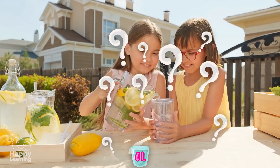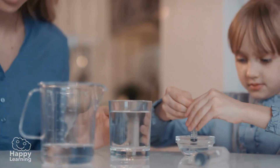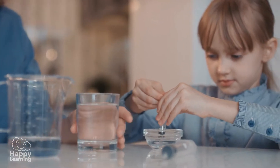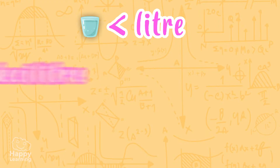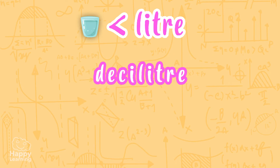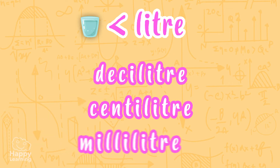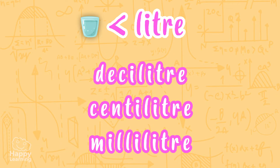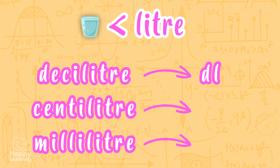So how do we measure it then? We just have to know that there are smaller units than the liter. Which are they? The deciliter, the centiliter, and the milliliter. And they are represented as DL, CL, and ML.